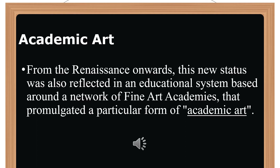From the Renaissance onwards, this new status was also reflected in an educational system based around a network of fine art academies that promulgated a particular form of academic art. This contained all sorts of rules about how paintings and sculptures were to be created. Elements such as subject matter, form, message, composition and color were quite strictly regulated. Failure to follow the rules meant exclusion from the prestigious annual art exhibitions organized by the academies. Since participation in these art shows was often the only way an artist could gain a reputation, win commissions and ultimately secure membership of his national academy, exclusion meant financial ruin. It wasn't until the 20th century that the power of the academies began to wane in any significant sense.